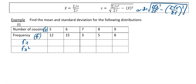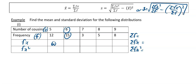When you look at this example, we're going to need the summations of three rows. You're going to have your sigma f, your sigma fx, and your sigma fx squared. To get your fx, it is just the 5 times the 12, so it's 60. Then the 6 times the 15, which is 90. Next one is the 7 times the 3, which is 21. 8 times the 5, which is 40. And 9 times the 8, which is 72.